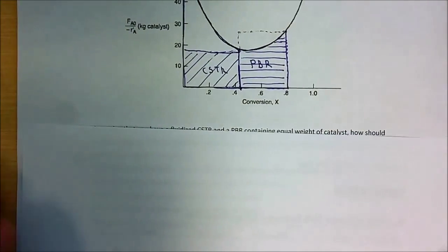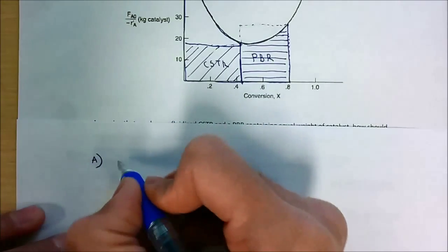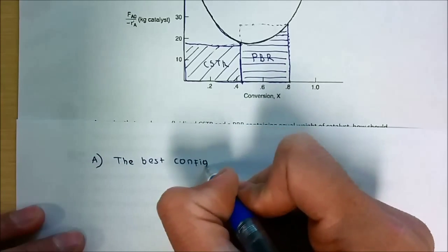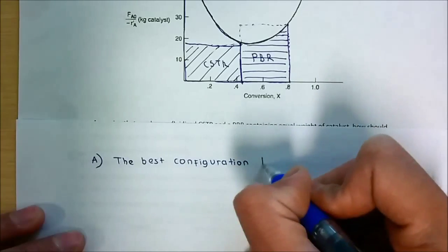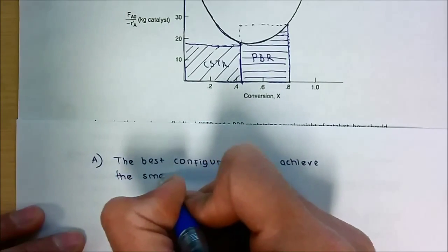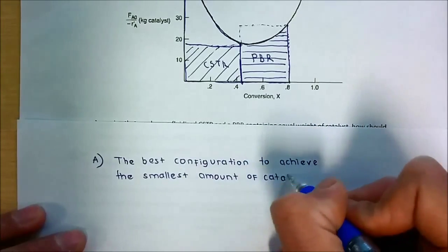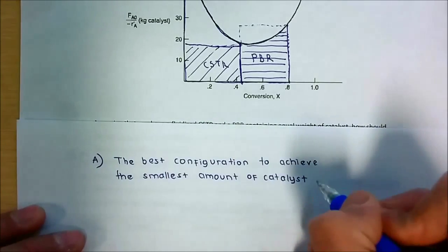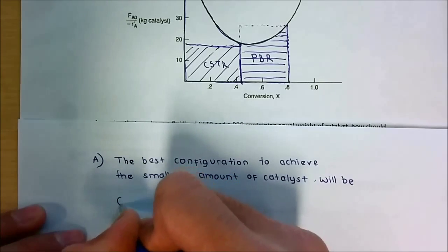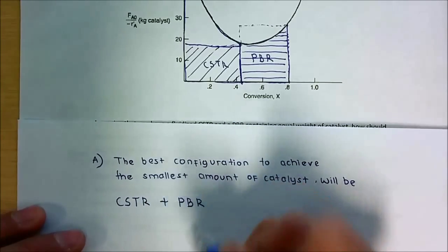We conclude for part A: the best configuration to achieve the smallest amount of catalyst is CSTR reactor followed by PBR reactor.